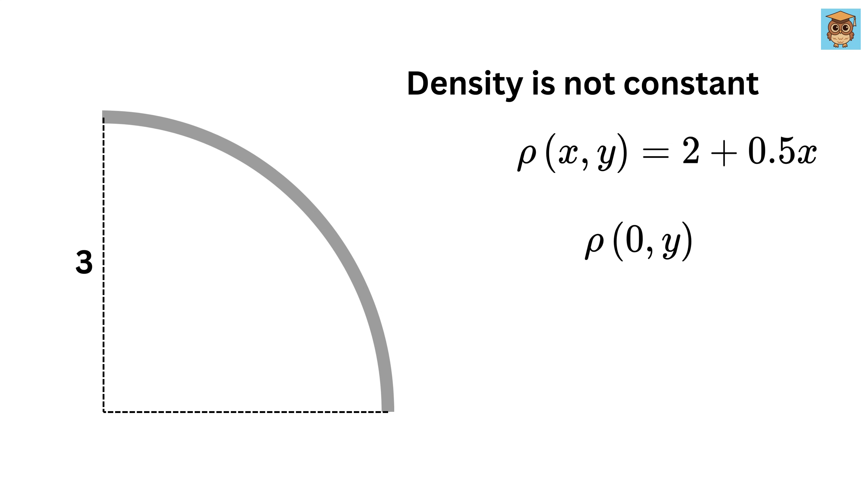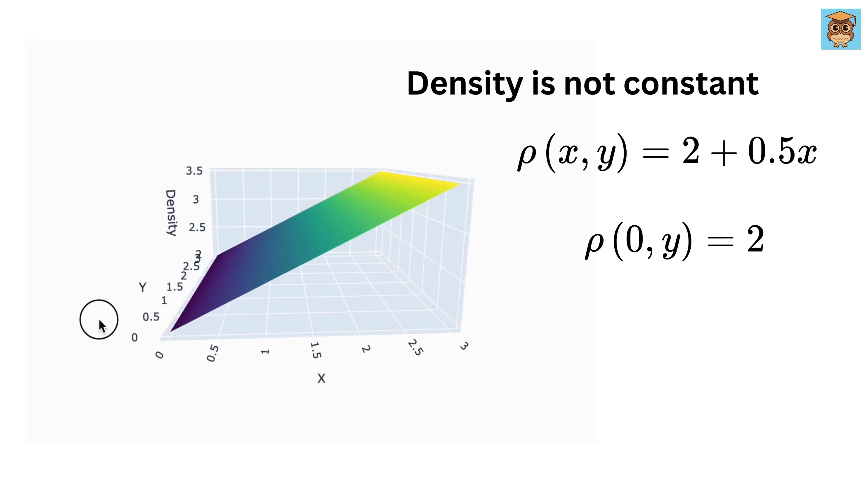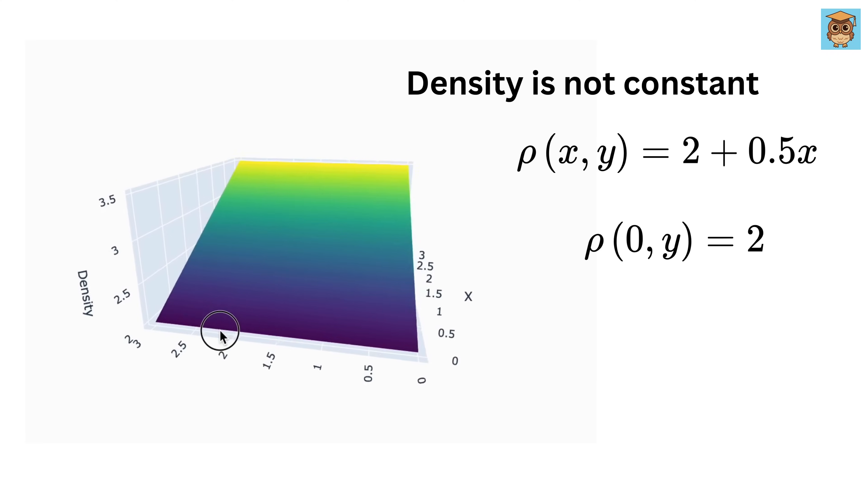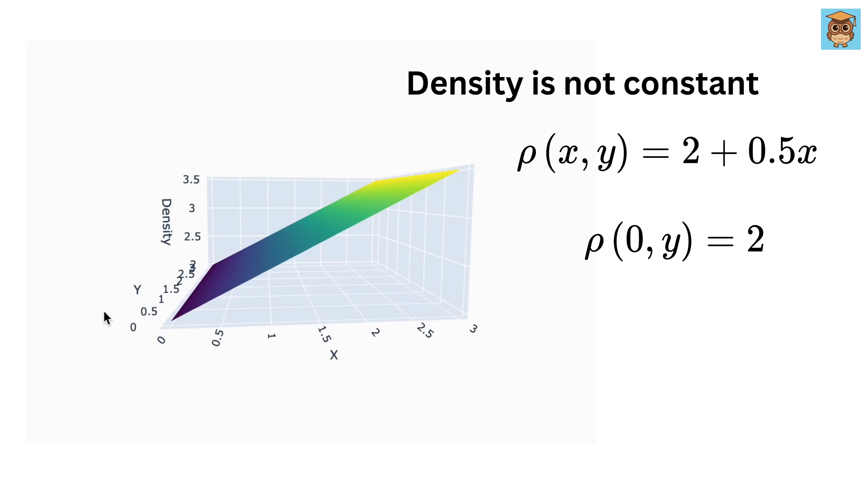This means that at x equals 0, the density is 2, and as x increases, the density increases as well. Look at this density surface in 3D. You can see how the density is increasing with x. Look here, when x is 0 and we vary along y, the z value, or the density, is constant at 2,